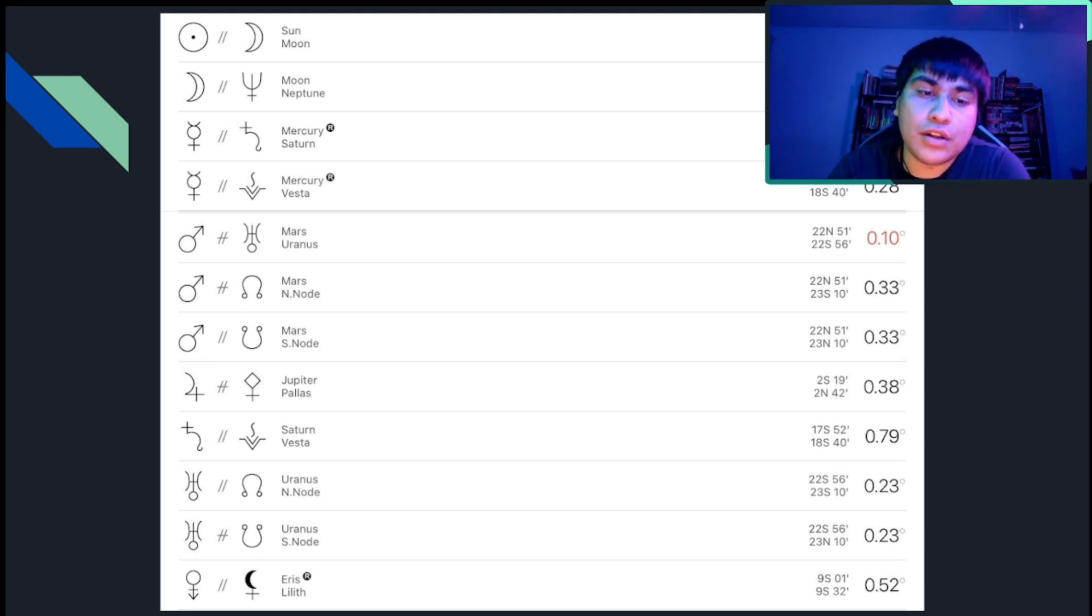Mars Contraparallel and Parallel North and South Node. This will indicate that she is an individual, and the same can be said for Uranus, she is an individual who will build karma or have good experience with building her future in entertainment or even in sports. Also, of course, in either politics, if she chooses to do so.